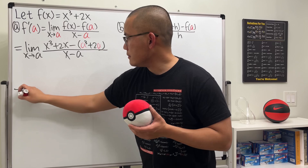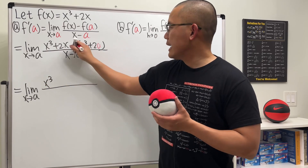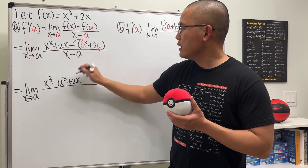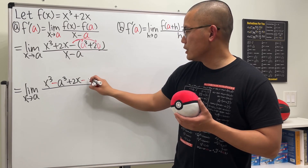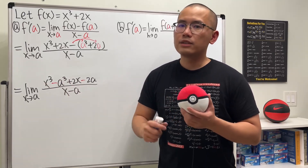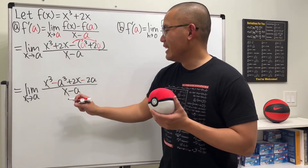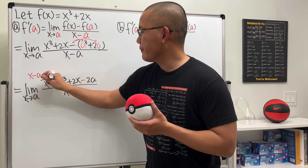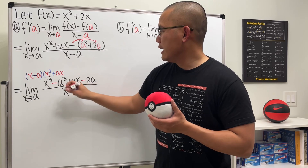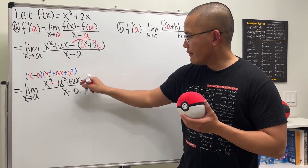I'm going to pair terms up: the x³ with −a³, and the 2x with −2a. Writing this out, we have the limit as x approaches a of (x³ − a³) plus (2x − 2a), all divided by x minus a. For the first two terms, this is a difference of two cubes. Factoring that gives us (x − a) times (x² + ax + a²).